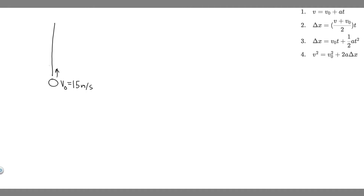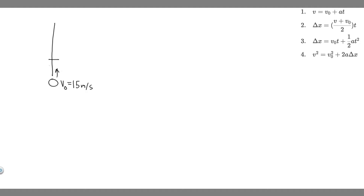The first thing we always want to do for kinematic problems like this one is to draw what's going on. So we have this ball, and it's going to be thrown straight up. We know the initial velocity of the ball is going to be 15 meters per second. Basically what we're trying to do is find how far it travels upwards at different times — so we're trying to find delta Y and the velocity V.